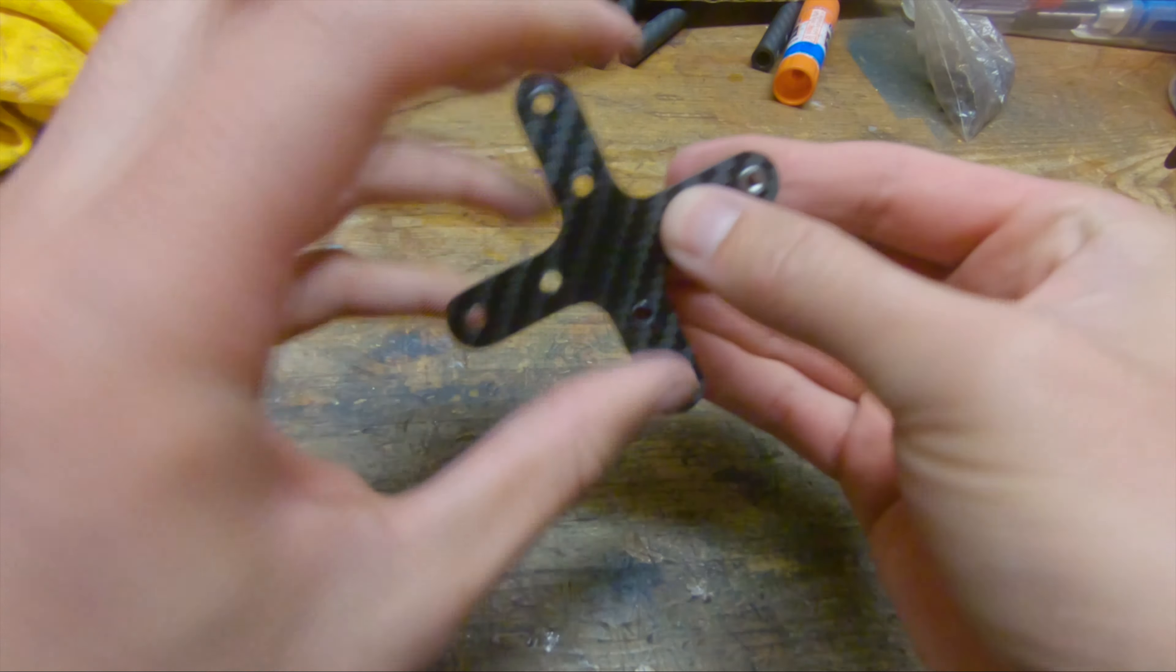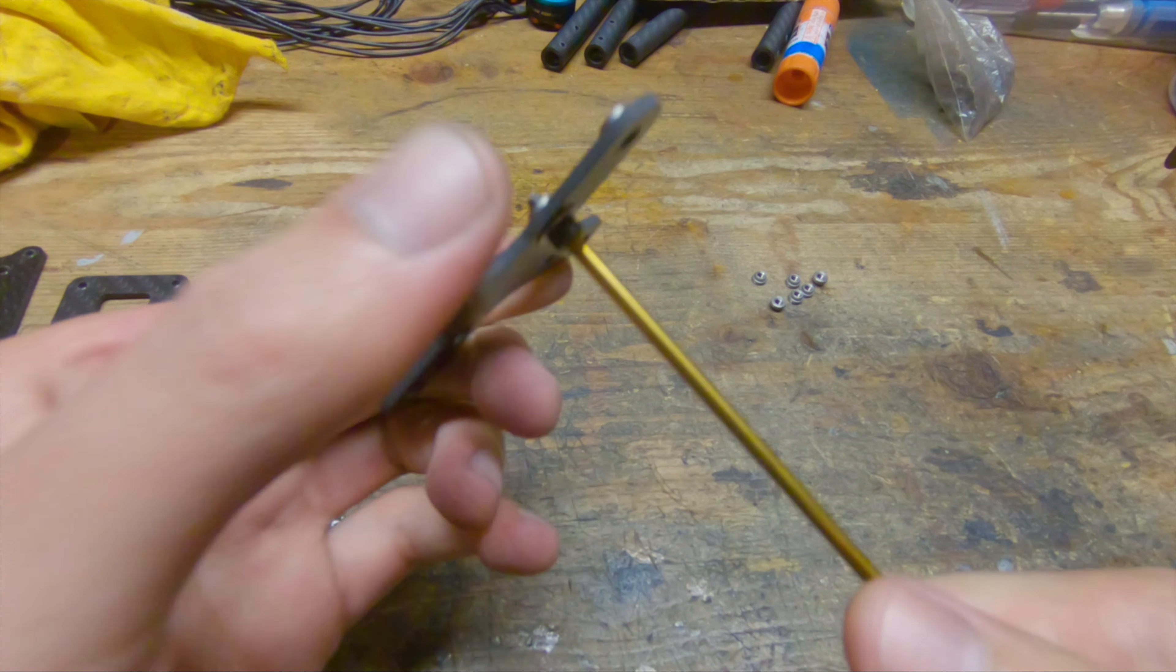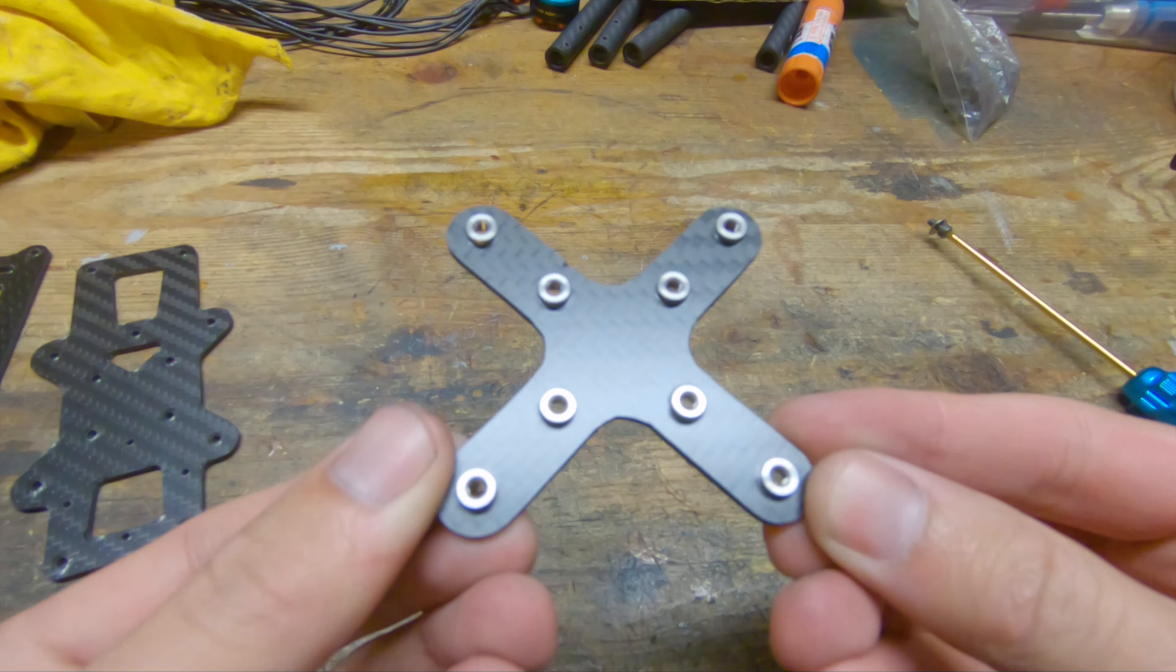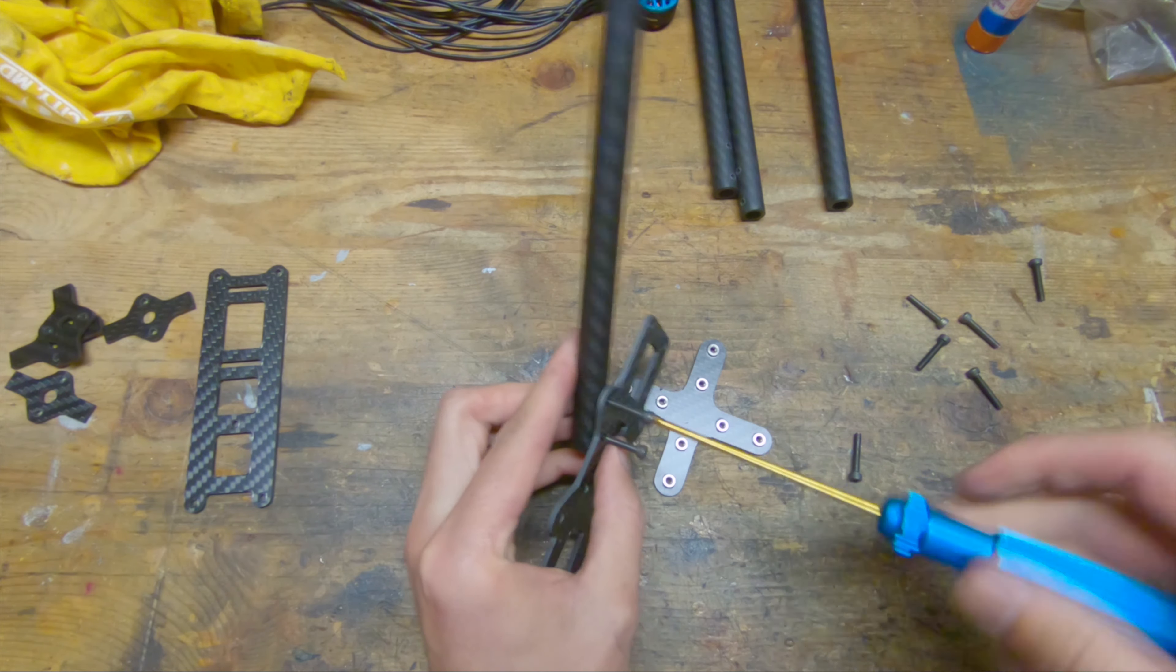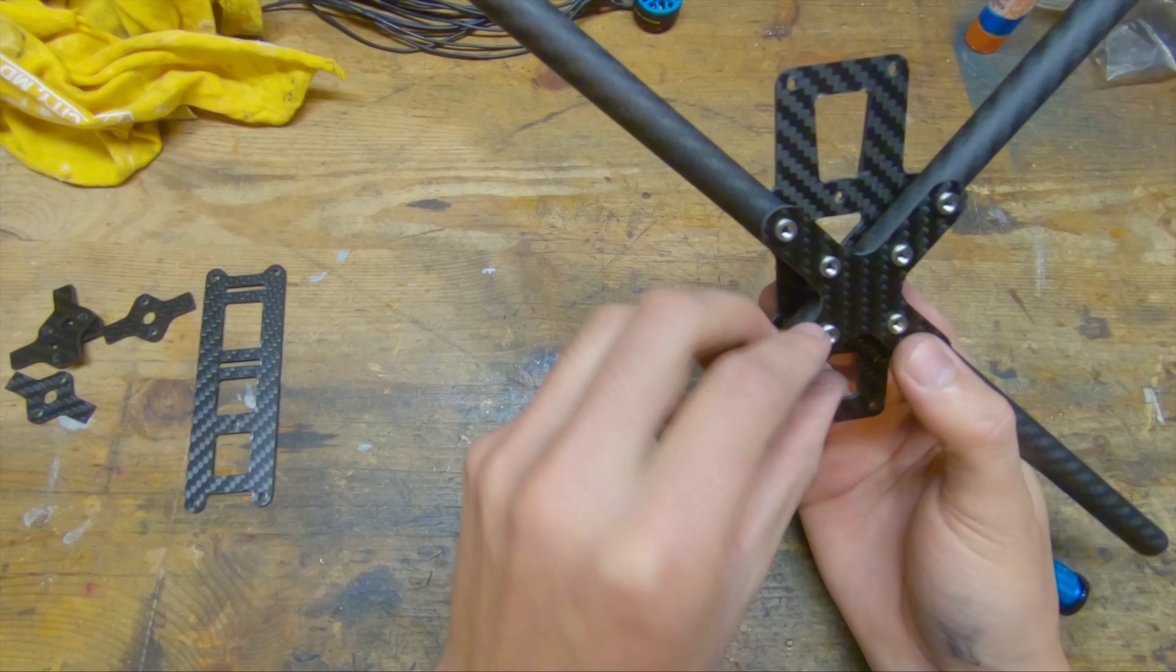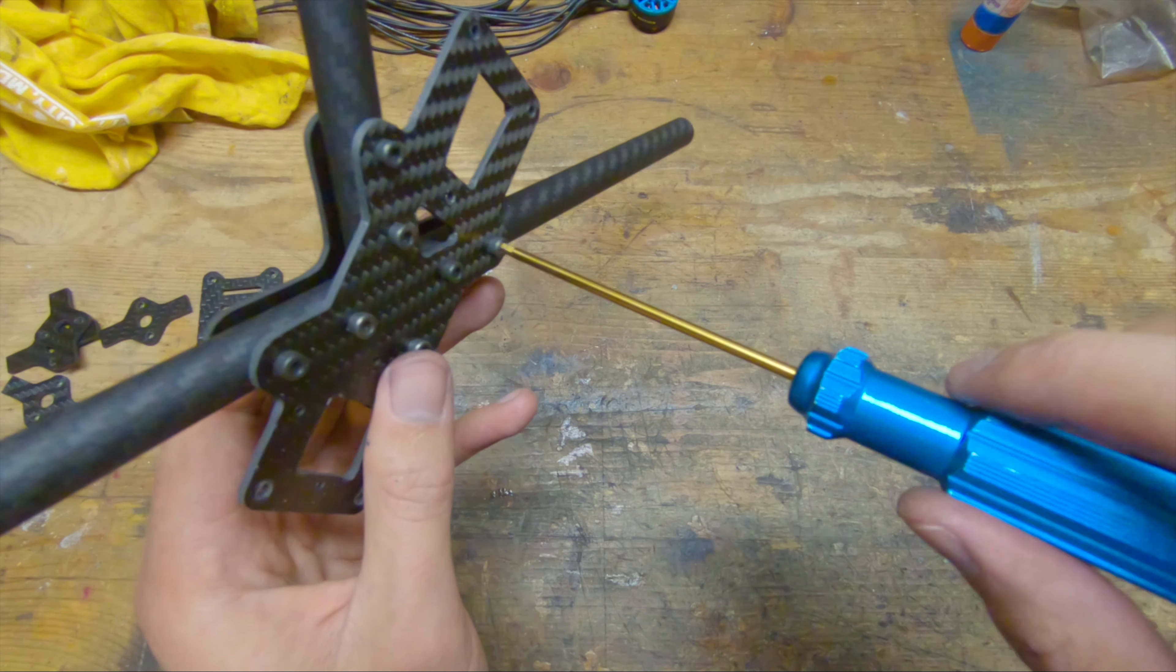Now I'm installing the press nuts into the mid plate and now I'm bolting the arms on. Then I'm putting the mid plate on and I have to go around all the screw holes and tighten them down a little at a time.